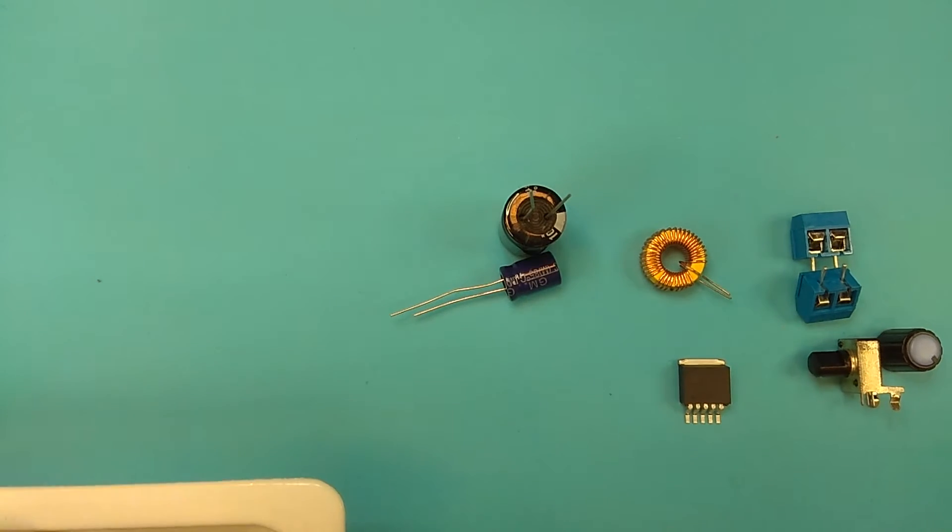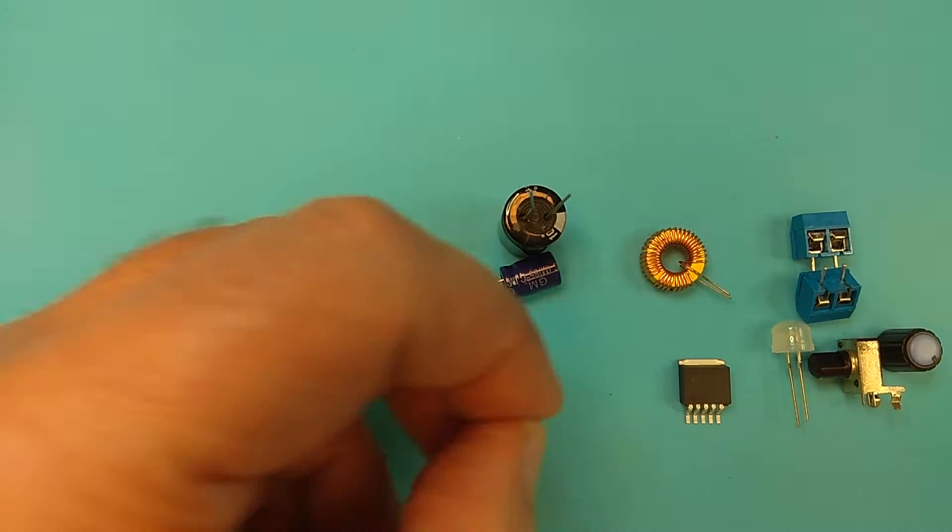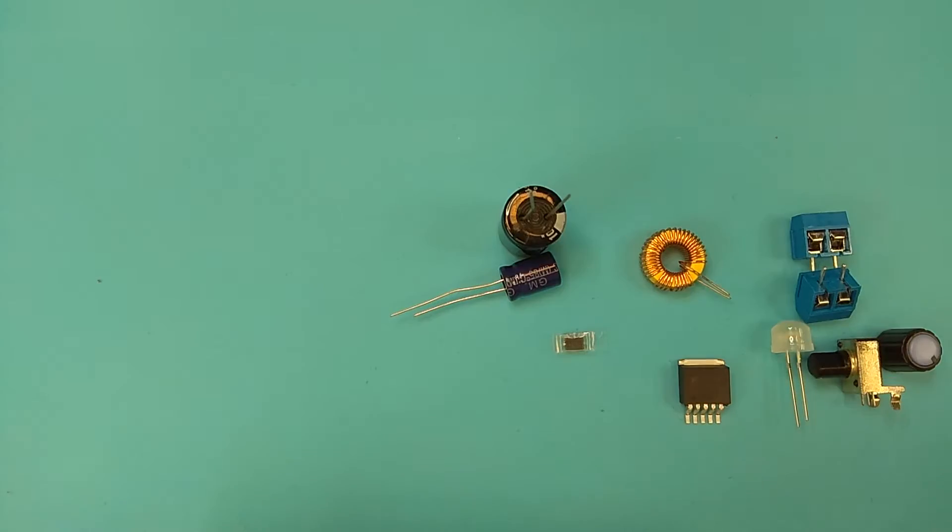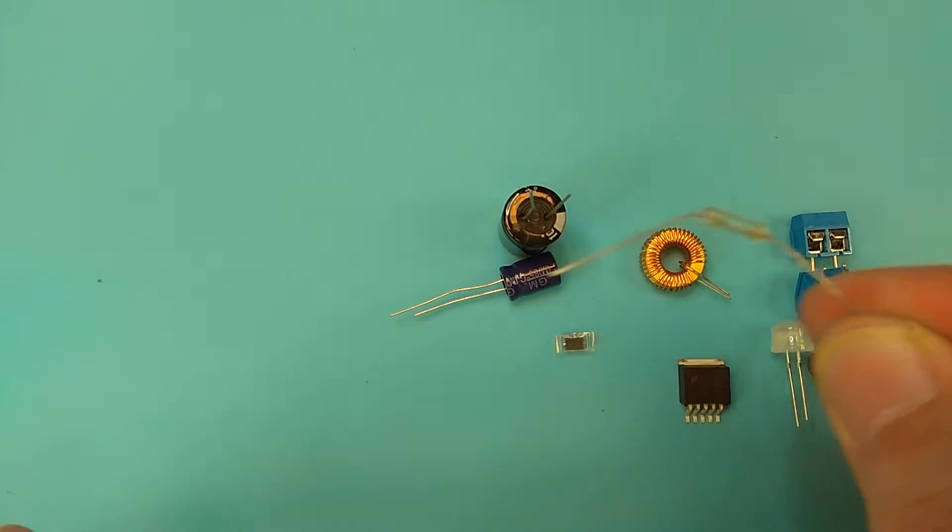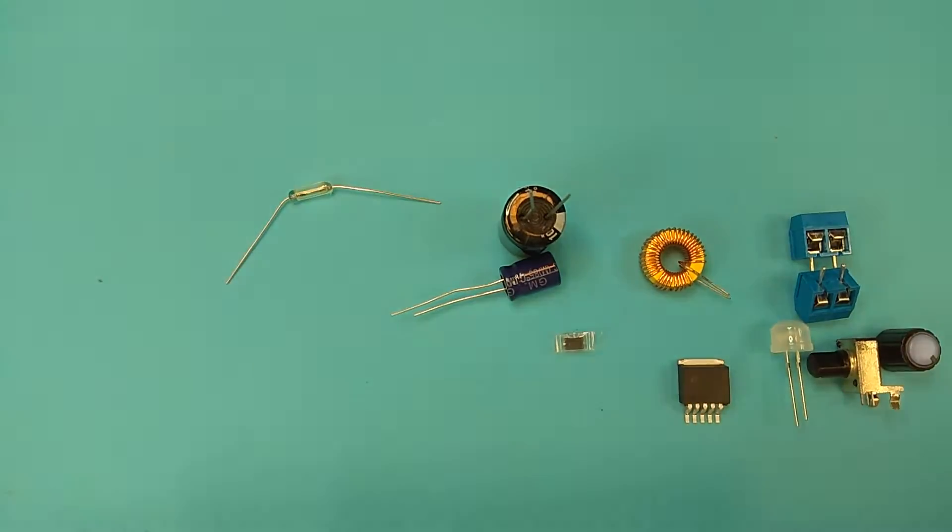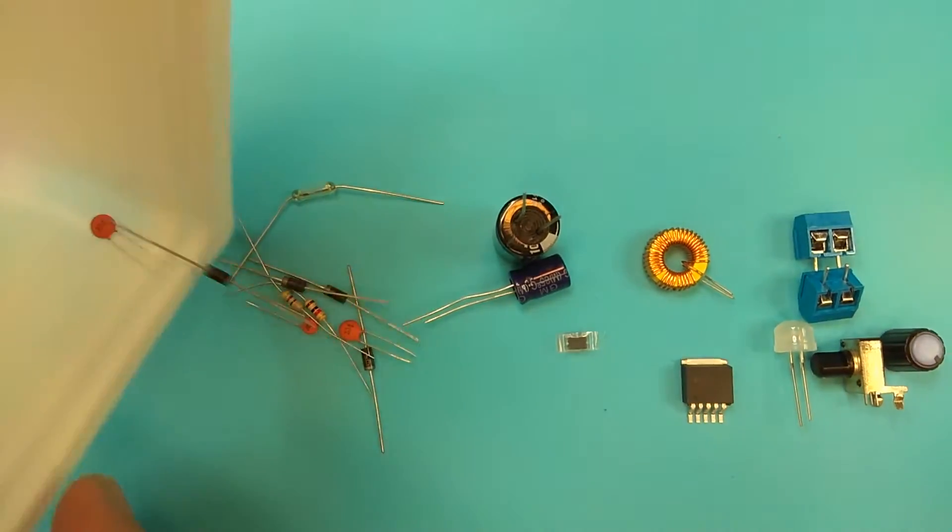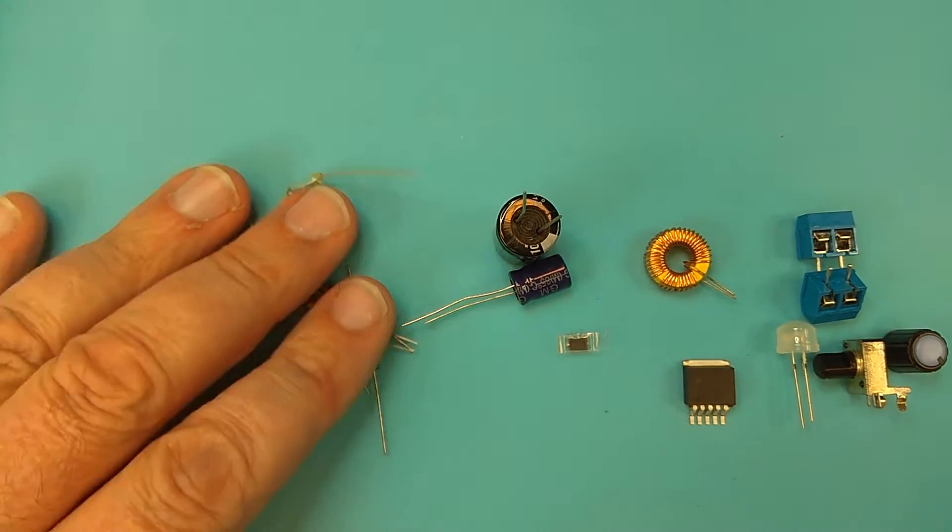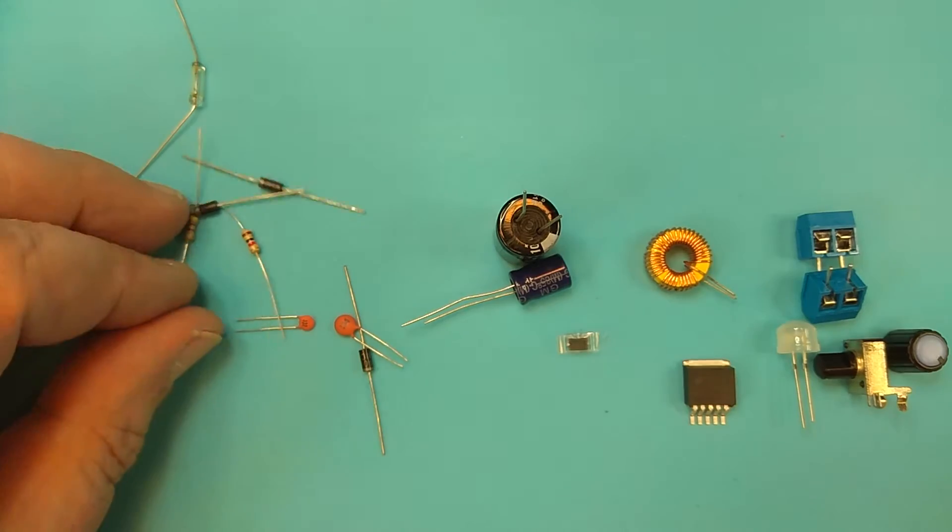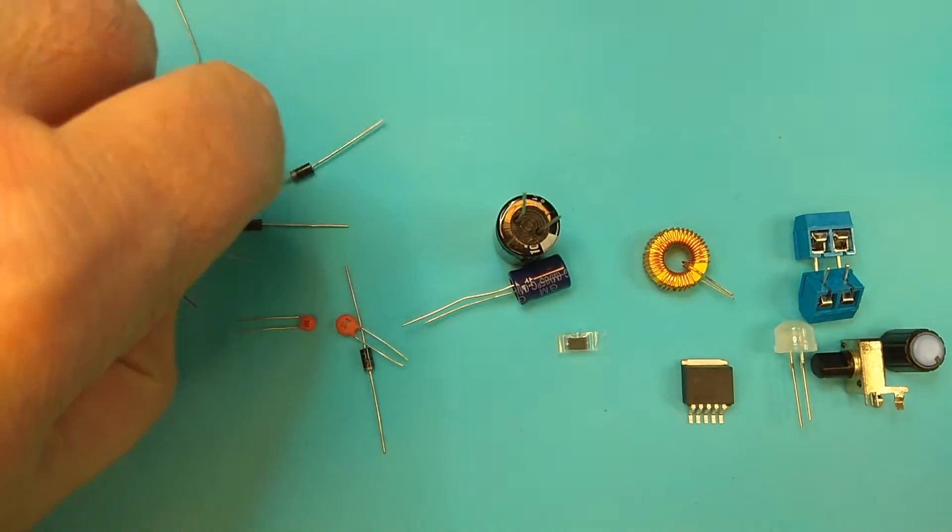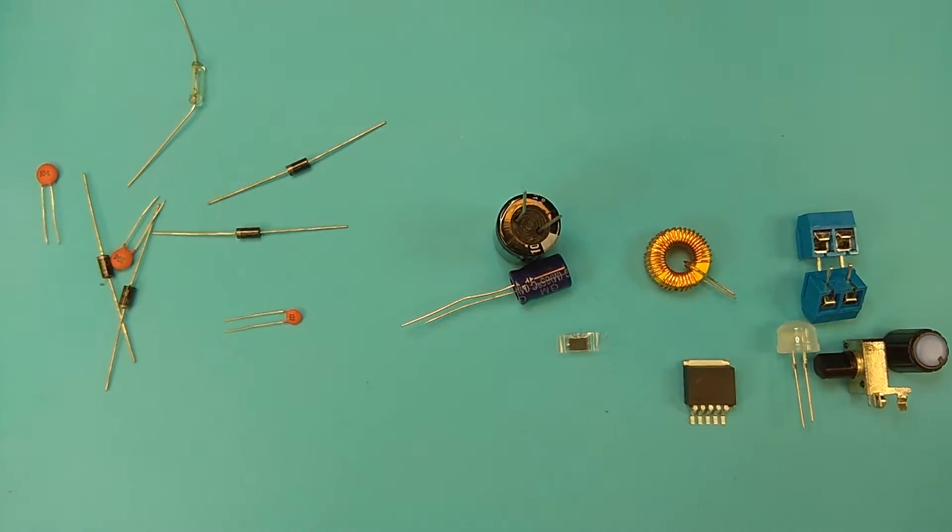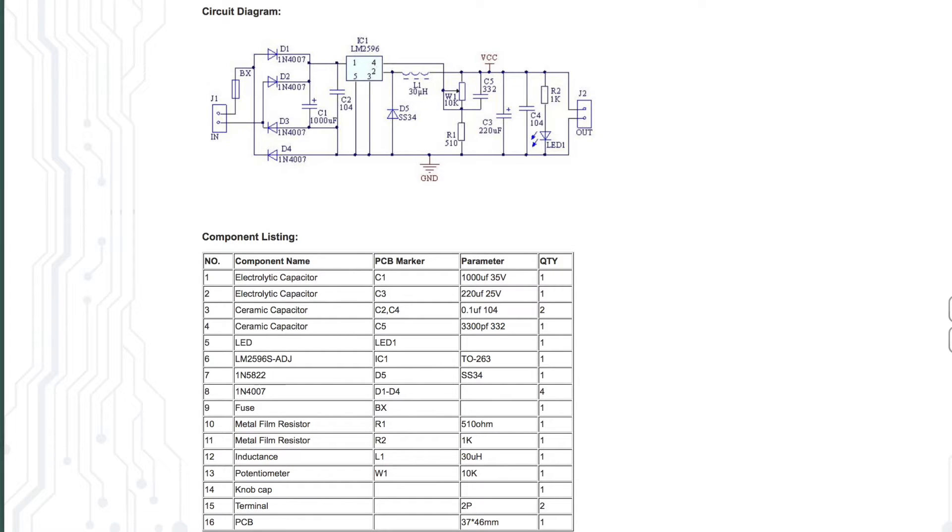Some other capacitor, a big LED for indicating the output power, one surface mounted diode. This glass is a fuse, and some diodes and capacitors. I don't want to show all of them. Let's start with the resistors because they are the smaller components. You can see the connection diagram on the webpage and the values of the components.